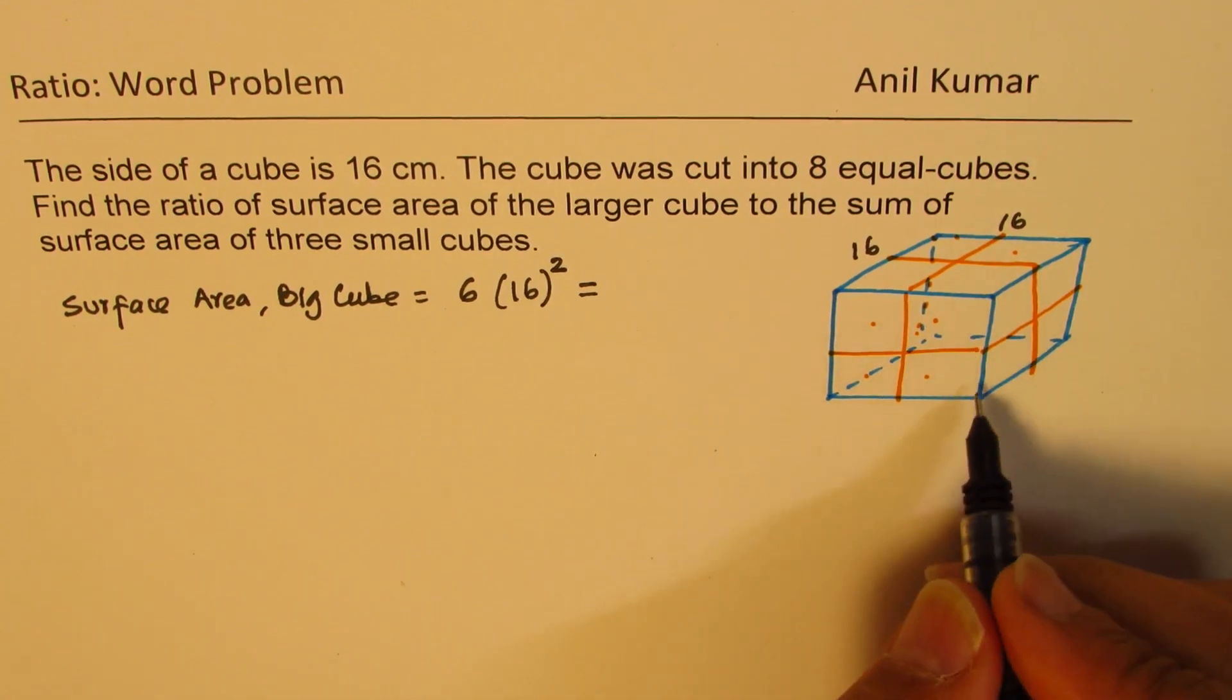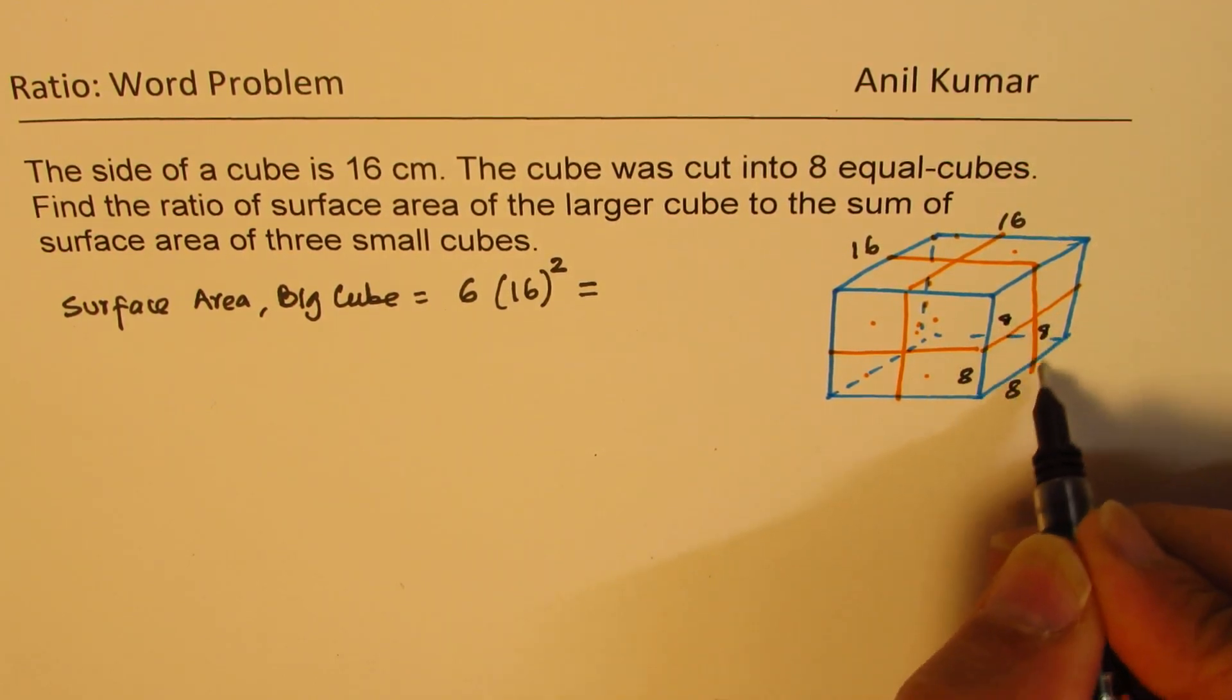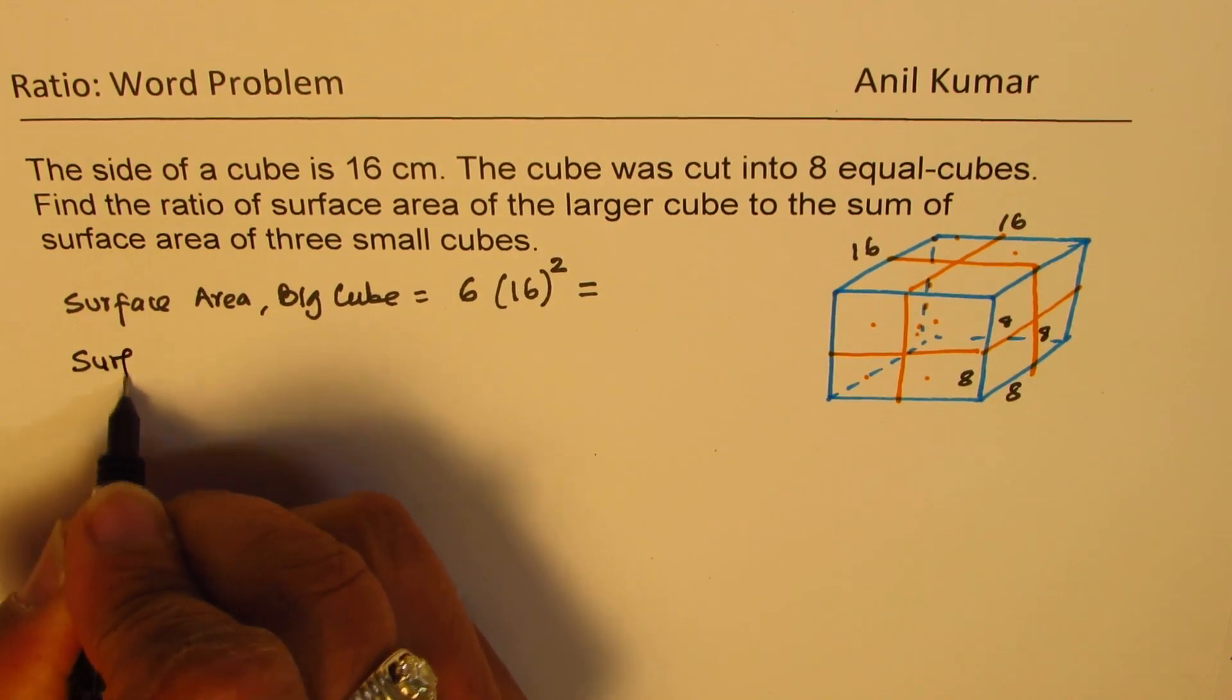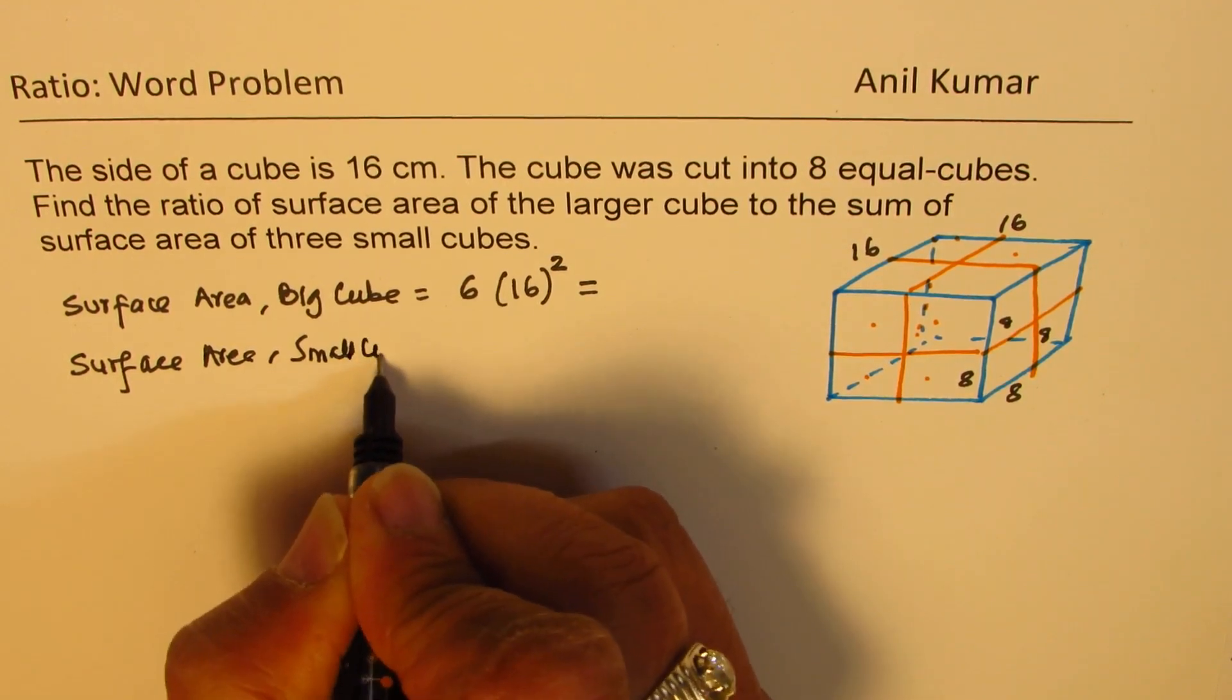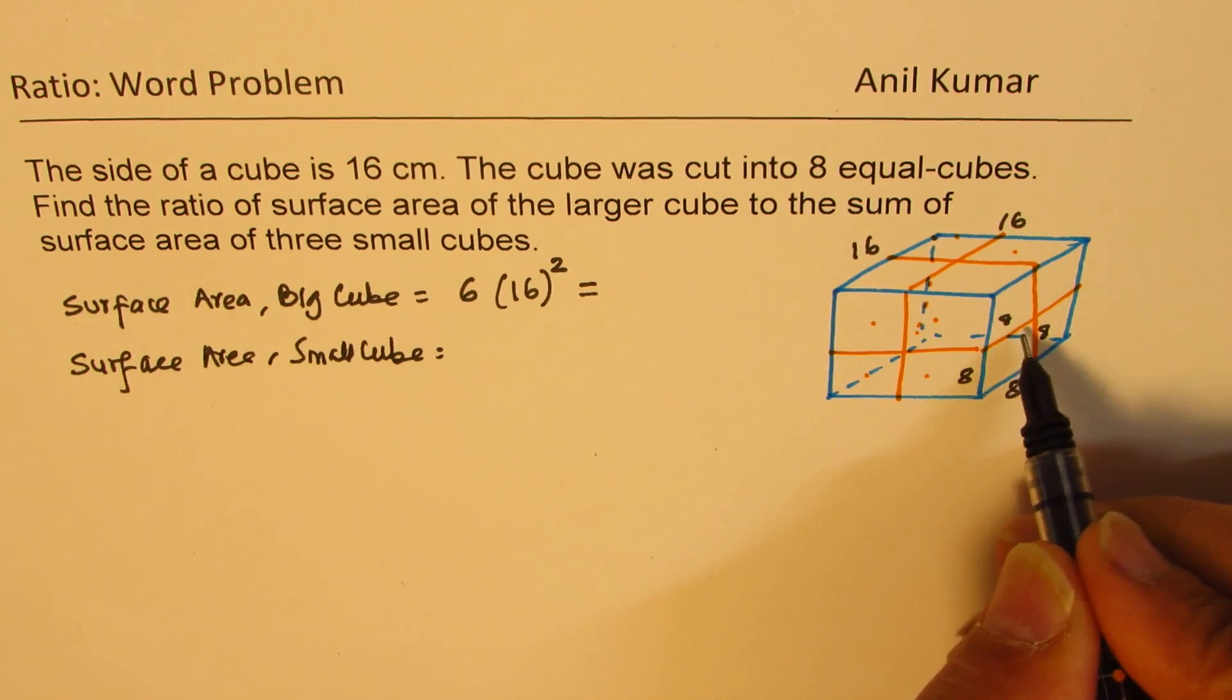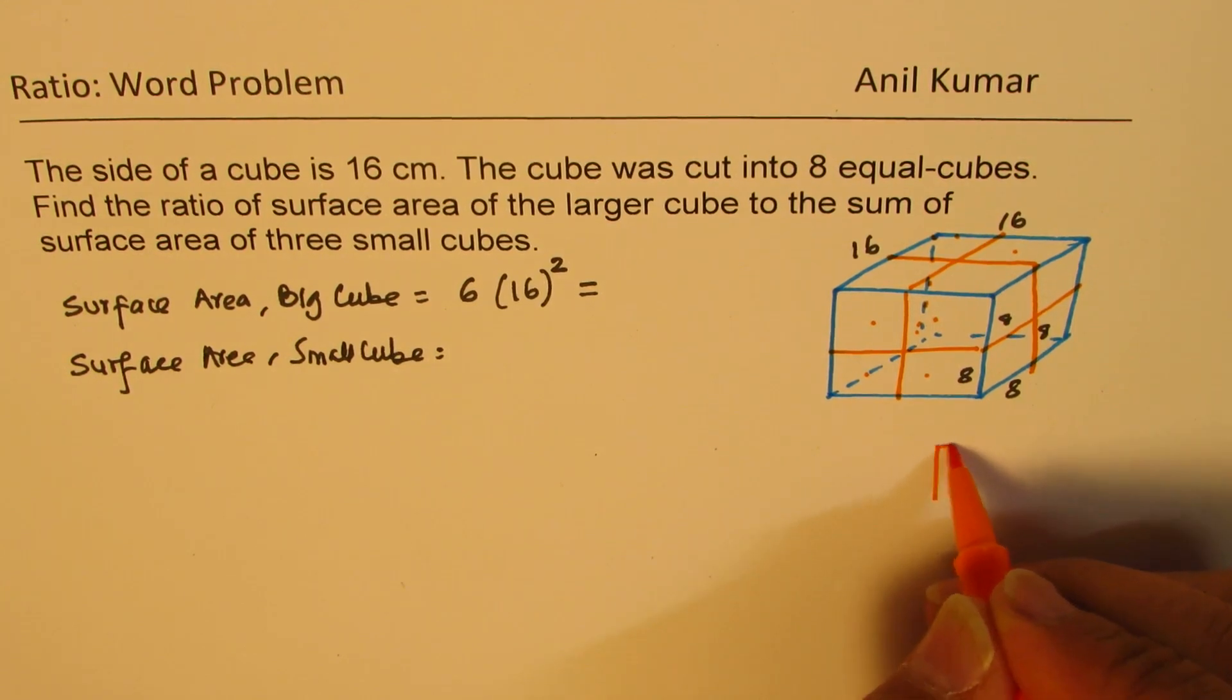Now the small cubes which you have seen here are each eight units. So that is the small cube, half the length. So surface area of small cube, if you see there are six faces for a small cube, right? So we have a small cube here. Let me just redraw it.